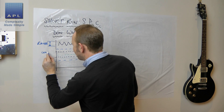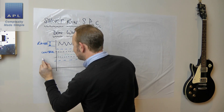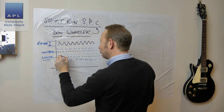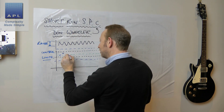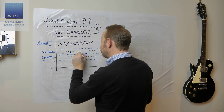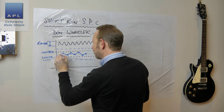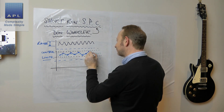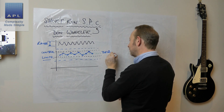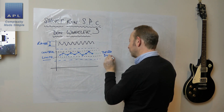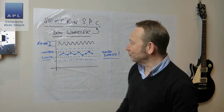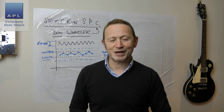This is really important: these are control limits — they are not spec limits. And then of course, ongoing, you can use this graph to make sure that you get the process centered and effectively produce zero defects, which is exactly what you should be producing on a machine that's this capable.